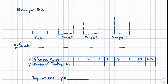In this example, we've got a similar situation. Shape one has three toothpicks on the bottom, one on the left, one on the right — that makes five. Shape two has three on the bottom, two on the left, two on the right: three, four, five, seven. Shape three has three on each side and three on the bottom — that's nine. Shape four has four on the left, four on the right: eight, nine, ten, eleven. So the values in the input-output table are five, seven, nine, eleven.